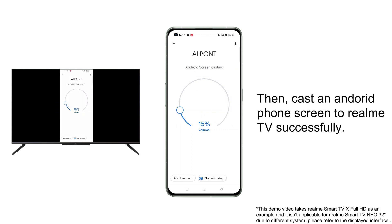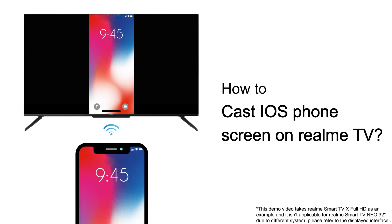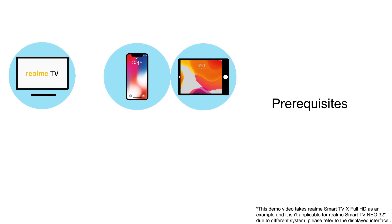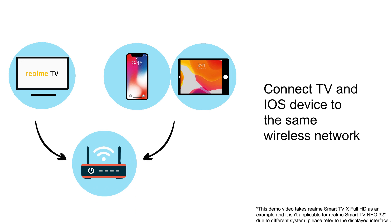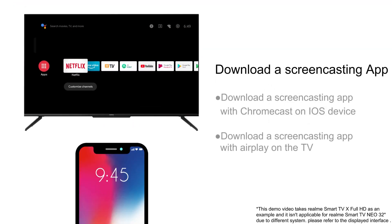How to cast an iOS phone screen on Realme TV. Please prepare a Realme Smart TV, an iOS device, and a wireless network. First, connect the TV and iOS device to the same wireless network.